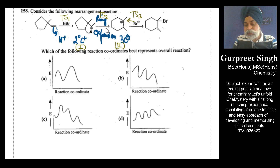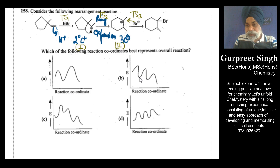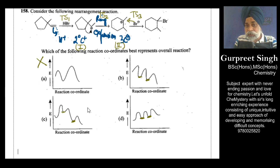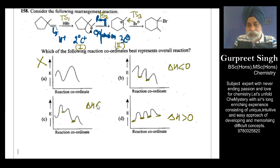Transition states are states where bond making and breaking is taking place, whereas intermediates can be isolated during the process using technology. The dips on the energy diagram are called intermediates — there are two intermediates here, so any option saying otherwise is wrong. Among the remaining options, one shows the reaction as endothermic (products higher in energy than reactants), but we know that adding HBr across a double bond breaks a π bond and forms two σ bonds. Since σ bonds are stronger, energy is released, making this an exothermic process.